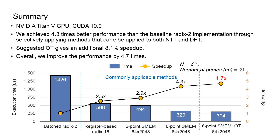Here is a summary. Our experiments are performed on an NVIDIA Titan V GPU with CUDA 10.0. SMEM in the graph label means Shared Memory Implementation, and 2/8-point means the per-thread NTT size. OT is applied only on the last two stages. The baseline is a matched radix-2 implementation. By applying the commonly applicable methods, we achieved 4.3 times performance improvement, and OT gives 8.1% additional speedup. Overall, we improved performance by 4.7 times. Please refer to the paper for results with various other parameters.